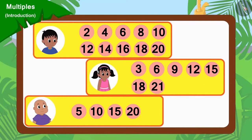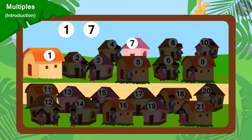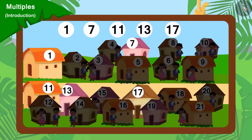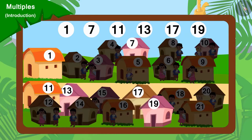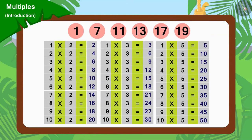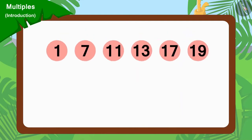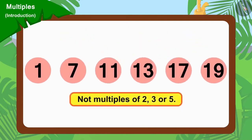Here, the numbers of the houses from where Raju, Pinky and Bablu went to collect donations are written. Are there any houses in which no one went to collect donations from? Yes, house numbers 1, 7, 11, 13, 17 and 19 are the houses in which nobody went. This is because these numbers cannot be divided by any of the numbers 2, 3 or 5. Therefore, we can say that these numbers are not multiples of 2, 3 or 5.